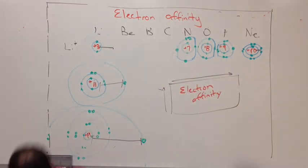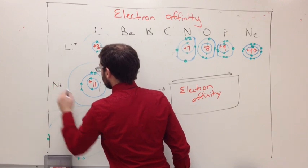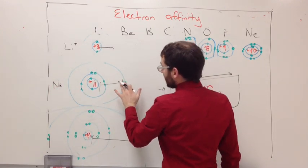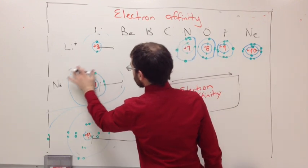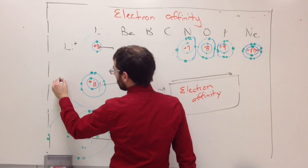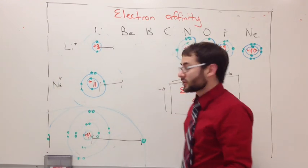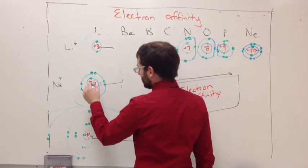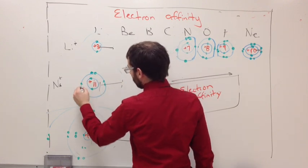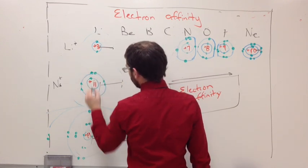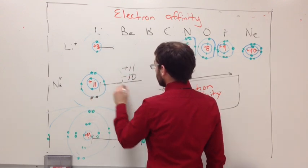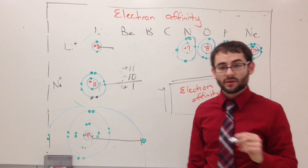With this one we have sodium. Sodium can either gain seven also or it can lose one. If this one loses it, it goes down and then because it lost one electron it's a +1 charge because now look at the difference here. We have +11 and now 1, 2, 3, 4, 5, 6, 7, 8—there's supposed to be 2 down here—9, 10, ten electrons. We now have a difference of one.